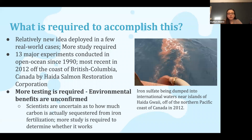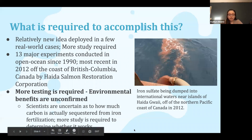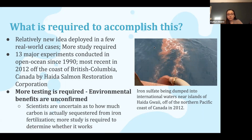So what is required to accomplish this? Iron fertilization is a relatively new idea, and the first experiment was done in 1990 and only 13 experiments have been done since then. So more study is required in real-world cases to figure out how it works and the real benefits or negatives of doing so. The most recent study was done in 2012, and iron sulfate was dumped into international waters off the coast of Canada by the Haida Salmon Restoration Corporation. More testing is required because the environmental benefits are unconfirmed. As mentioned before, there are studies that state that introducing iron causes blooms of phytoplankton, which in turn sequesters carbon. But other scientists are uncertain how much carbon is actually sequestered from iron fertilization, so more study is required to figure this out.